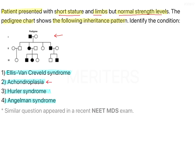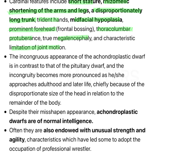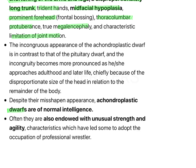These features are very typical of a patient with achondroplasia. Achondroplasia is a condition characterized by short stature, rhizomelic shortening of the arms and legs, a disproportionately long trunk, mid-facial hypoplasia, prominent forehead with frontal bossing, thoracic-lumbar kyphosis, megalencephaly, and characteristic limitation of joint motion.